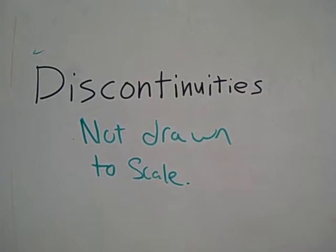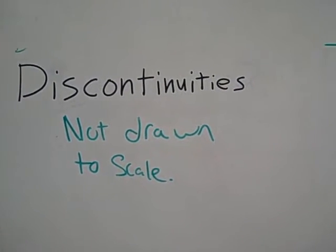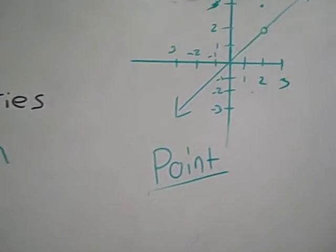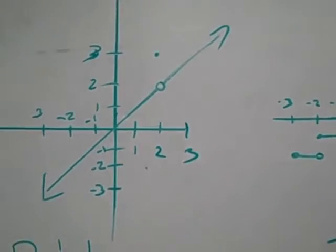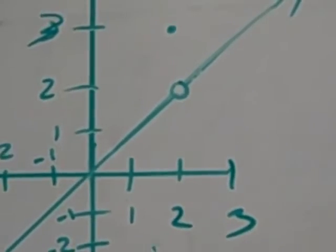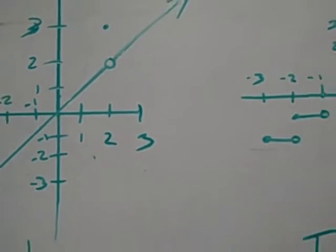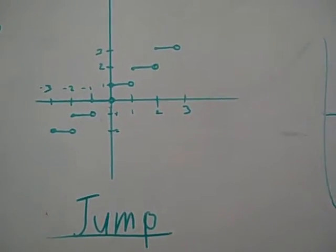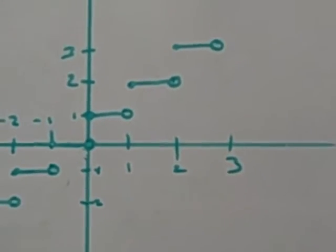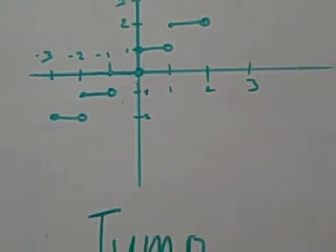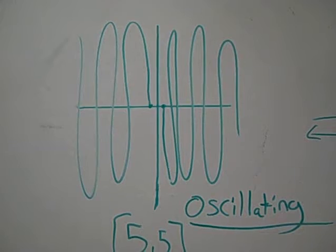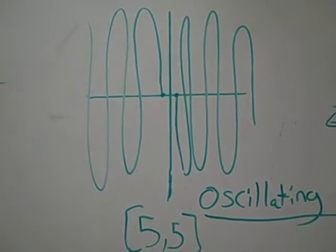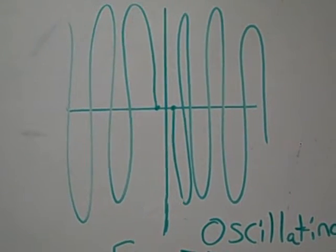To tell if there's a discontinuity, there are four particular types. The first type, point, is where there's essentially just a hole missing in the graph, as you can see at x equals 2. Then we have a jump discontinuity, which is where a function randomly jumps up to another spot, leaving a large gap vertically between the two points. The third type, oscillating, you'll almost never see — this is probably the only time you'll ever see an oscillating discontinuity. It oscillates and never actually reaches a number.